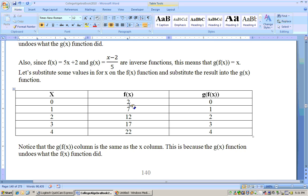If we do the f function first, the g is going to bring you back to what you started off with. If I put 0 in for x, substituting into the f function here, I get 5 times 0 is 0, 0 plus 2 is 2. Now substitute the 2 into the g function, and 2 minus 2 is 0. 0 over 5 is 0.